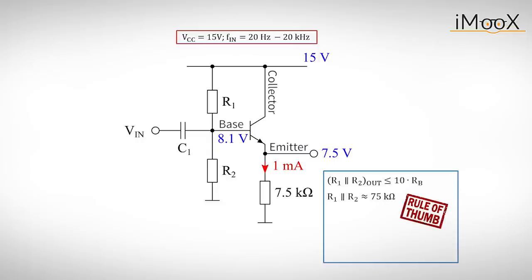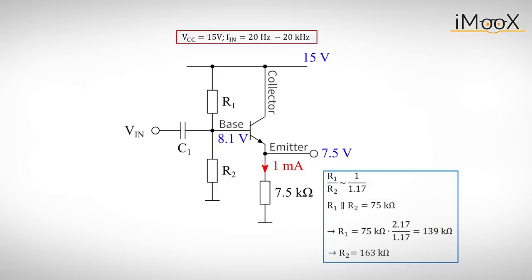According to the second rule of thumb, the output impedance of the DC bias source, in this case the impedance looking into the voltage divider, must be at least 10 times smaller than the input impedance looking into the base. This gives us a parallel resistance of about 75k for R1 and R2. With the ratio of 1 to 1.17 in mind, we get 139k for R1 and 163k for R2.